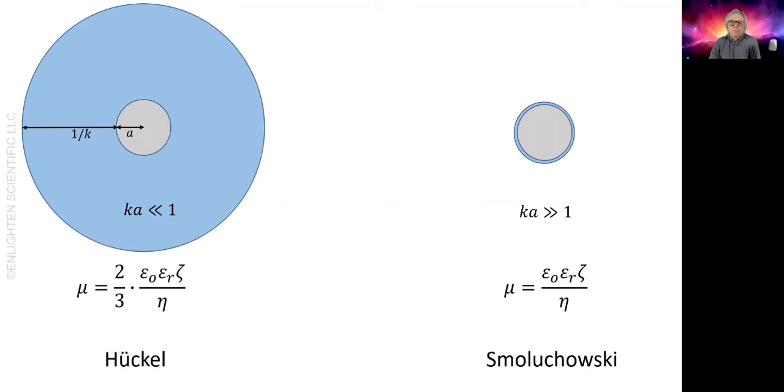Then there's the in-between situation, where the particle radius and the thickness of the diffuse layer are comparable. Somehow, we need to go from two-thirds to one, to go from the Huckel model to the Smoluchowski model.